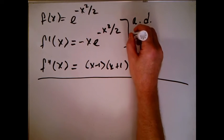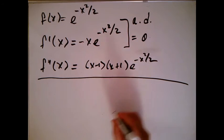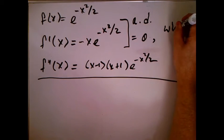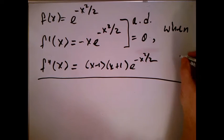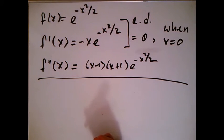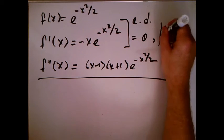When I set this equal to zero, when x equals zero. When I try to set e to the blob equal to zero, remember e to the blob is never zero, so we only have one critical point.